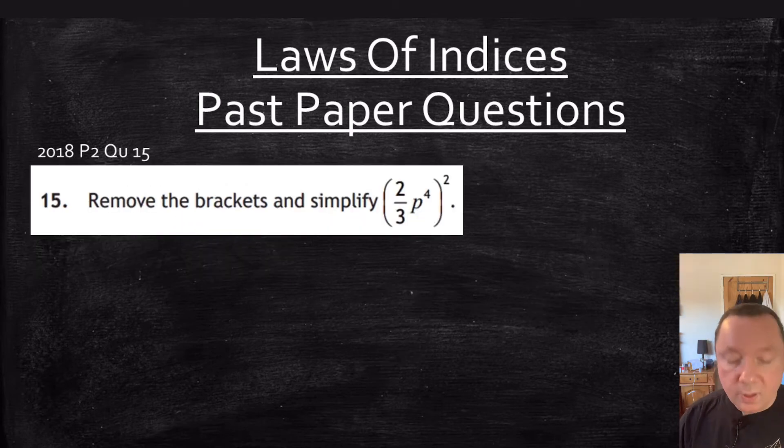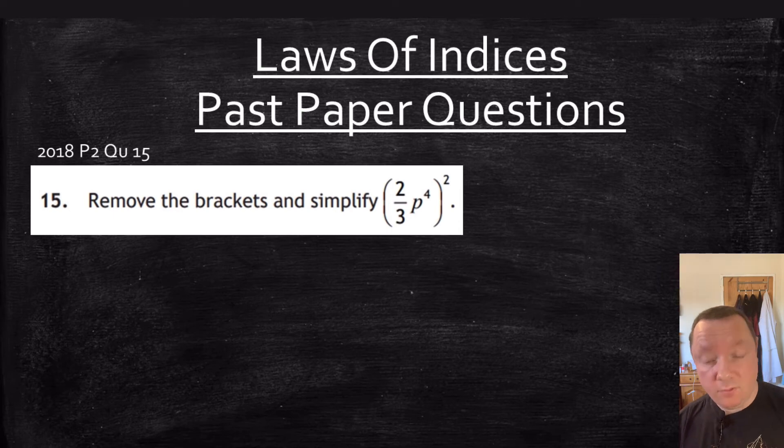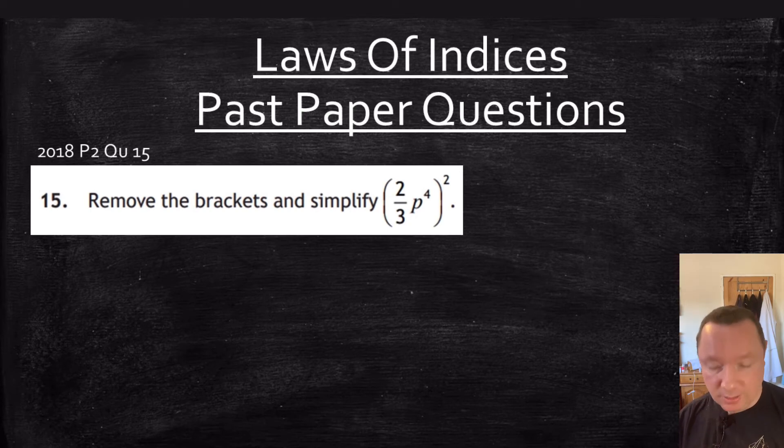This question comes from 2018 paper 2 question 15, quite late in the paper, a little bit harder. It says 2 thirds p to the 4 all squared. We need to be aware that we have to square the whole thing. Any numbers in front get squared as normal. The laws of indices only apply to the thing with indices in it.